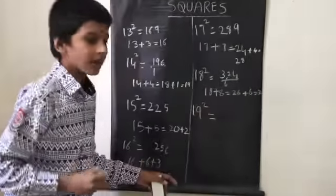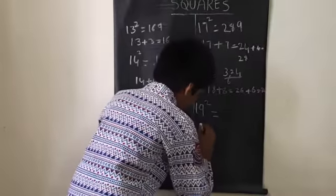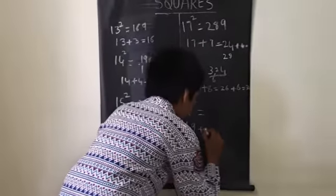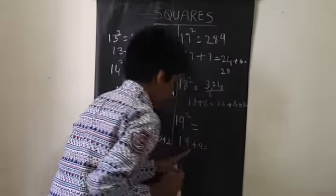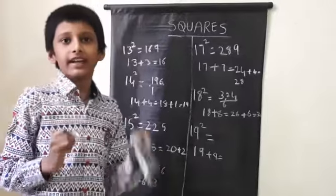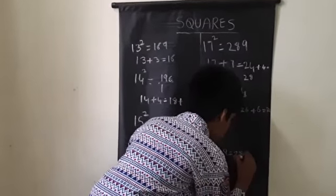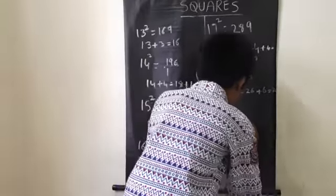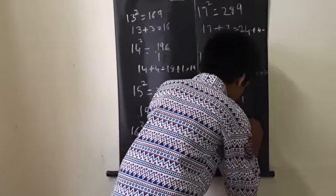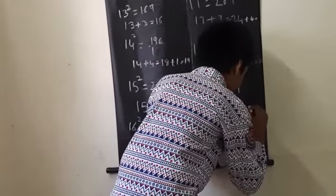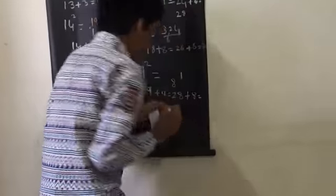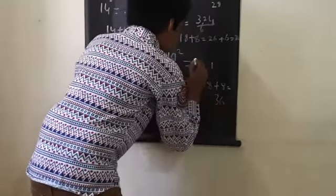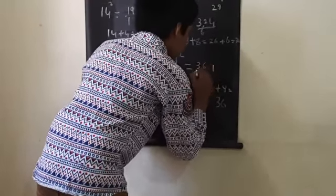Nineteen square. Nineteen, how much more than ten? Nine. Nineteen plus nine equals twenty-eight. Nine times nine, how much? Eighty-one. Twenty-eight plus eight equals thirty-six. 361.